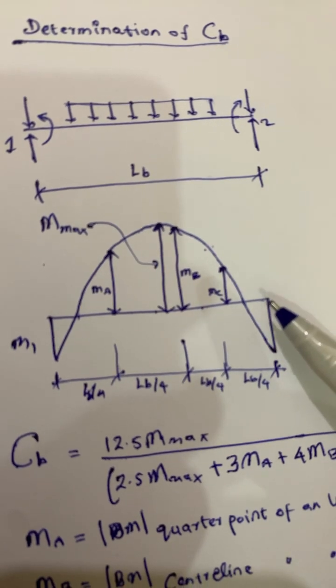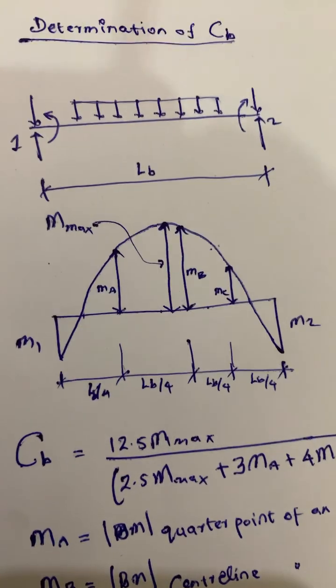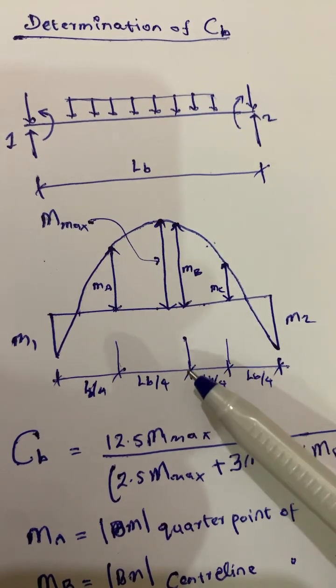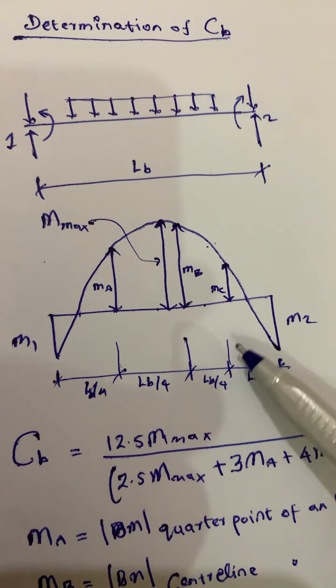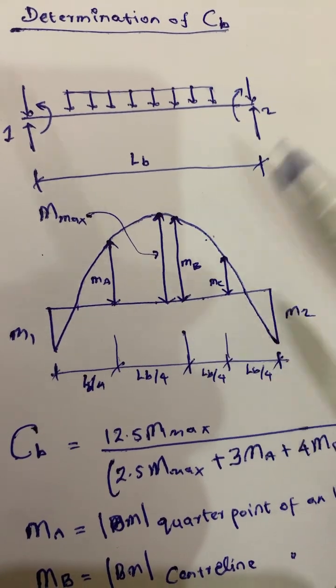At point 2 is M2, and at point 1 is M1, and moment at the quarter point is MA. At the center line it's MB, and 3 quarter point is MC. And the maximum moment, absolute maximum, is Mmax.